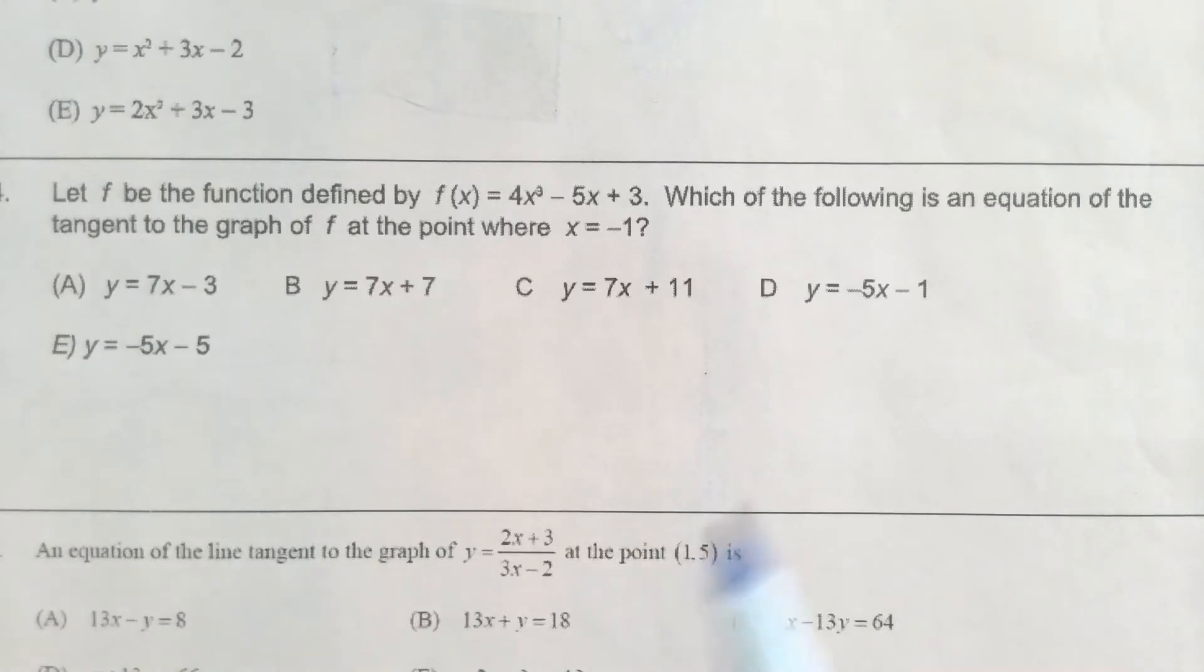Remember that when we're writing the equation of a tangent line at a specific point, we need to find the slope at that point, so the derivative at, in this case, negative 1. And then we also need to figure out what that point is on the function so that we can use it for our x and our y.